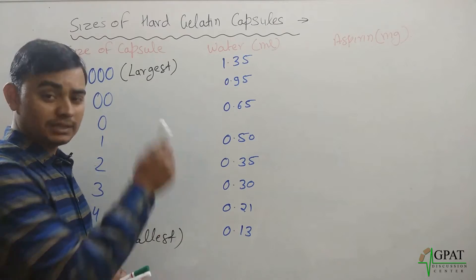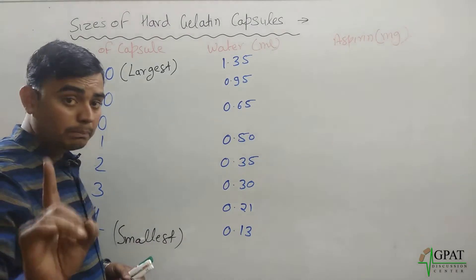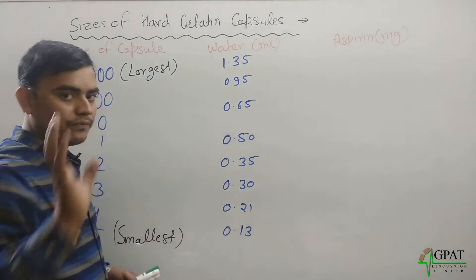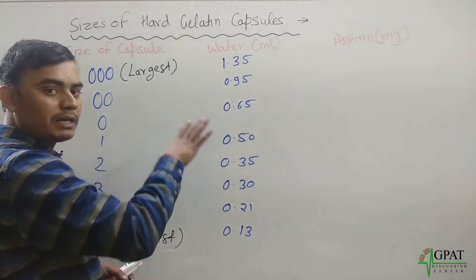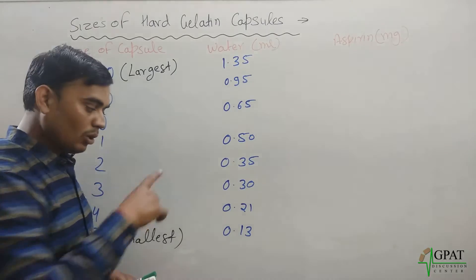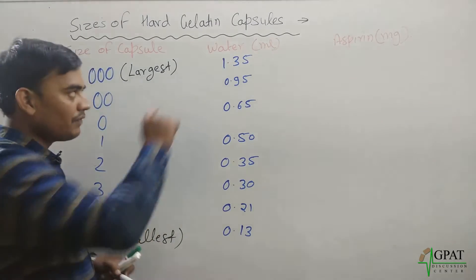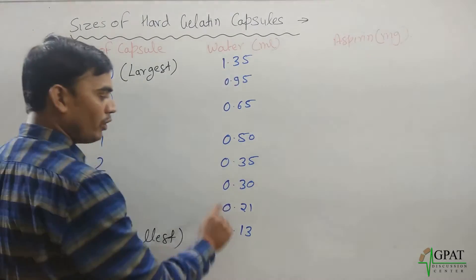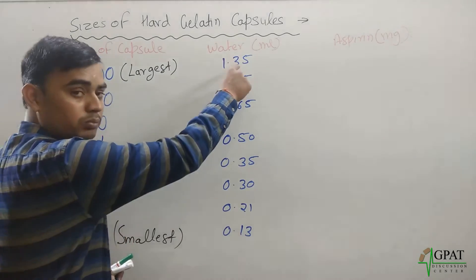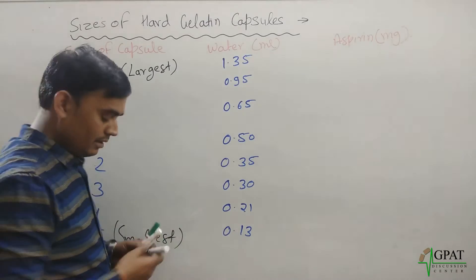To remember these parameters, the most important ones are the largest and the smallest. Simply remember: 1.35 is the largest, while 0.13 is the smallest. You just shift the decimal point — 1.35 becomes 0.13. That is easy to remember.